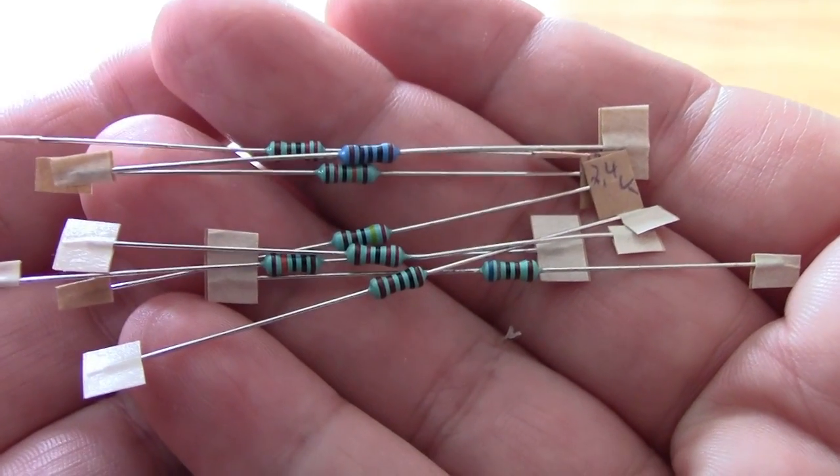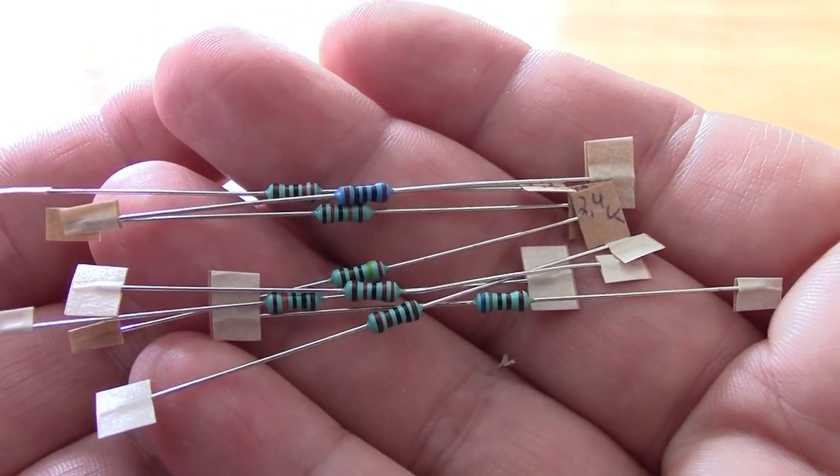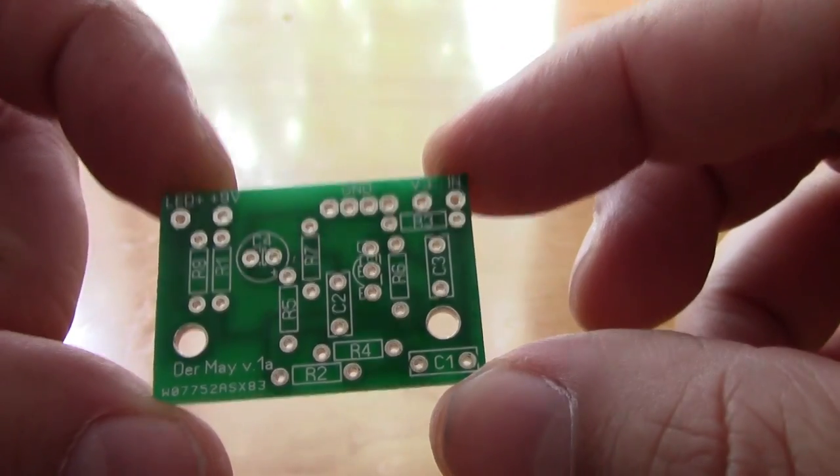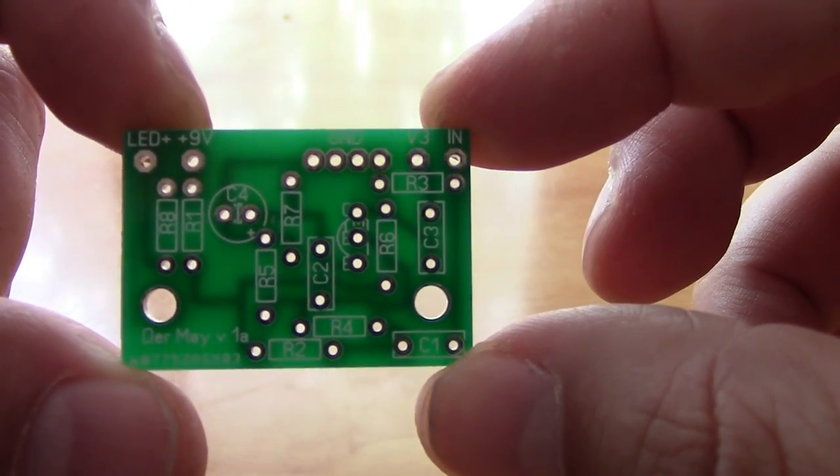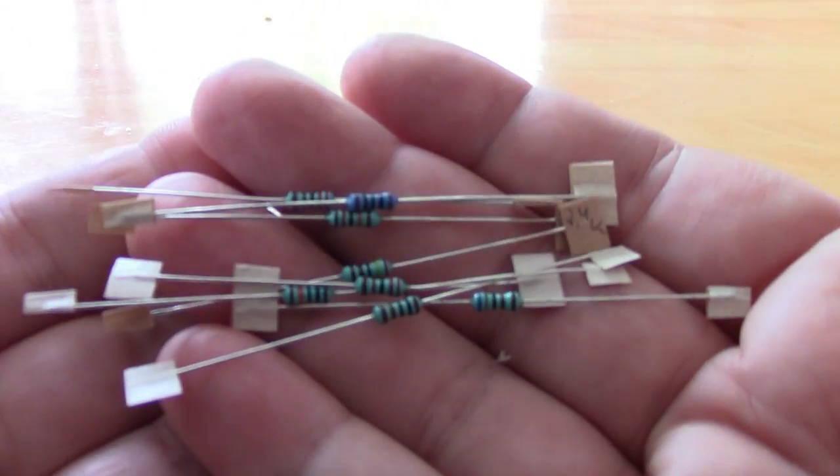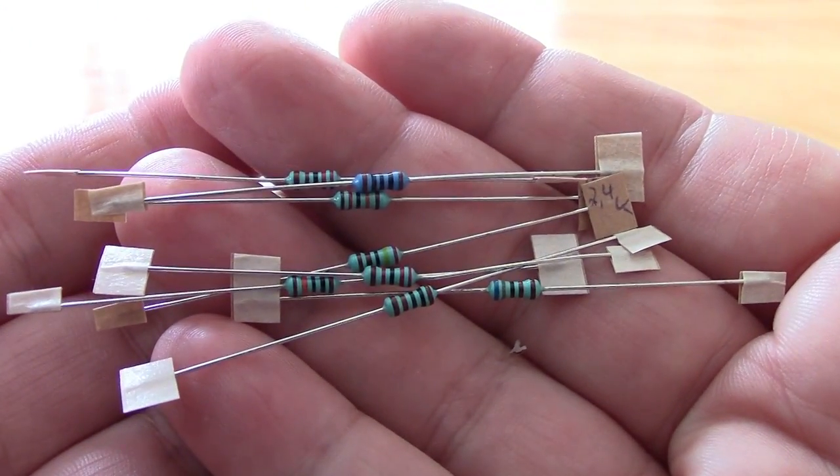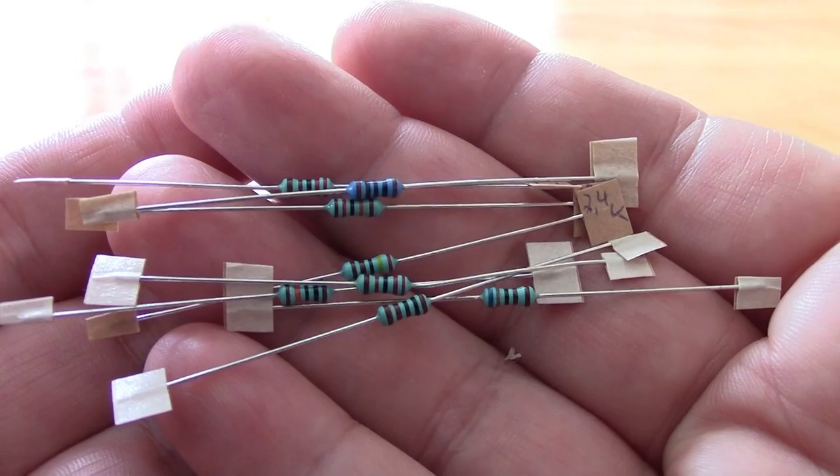Let us begin by going through the steps involving the installation of the resistors on the board. These little components you see here are the resistors. A total of eight resistors shipped with the kit.